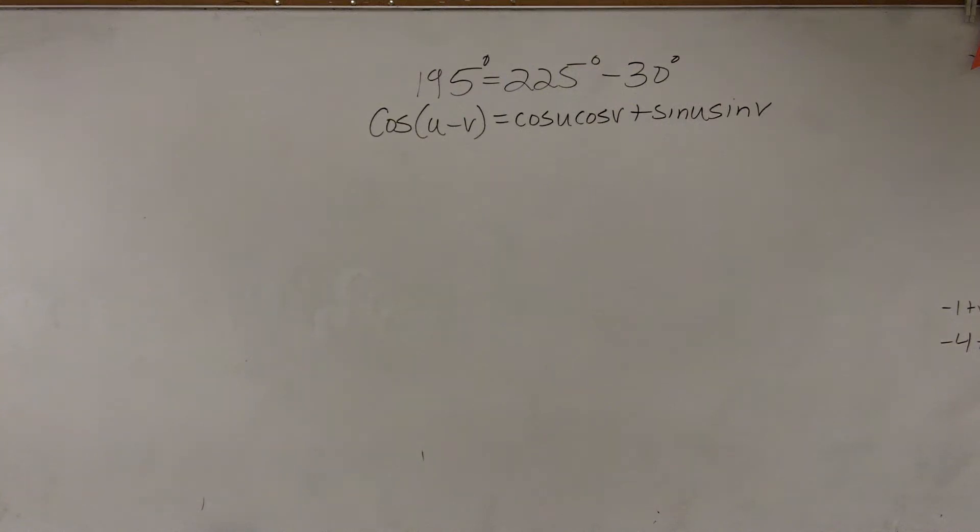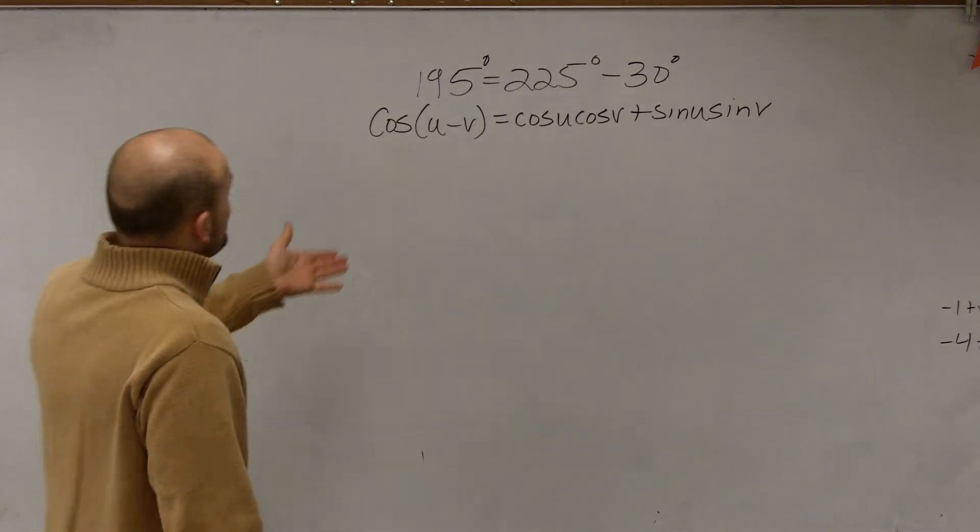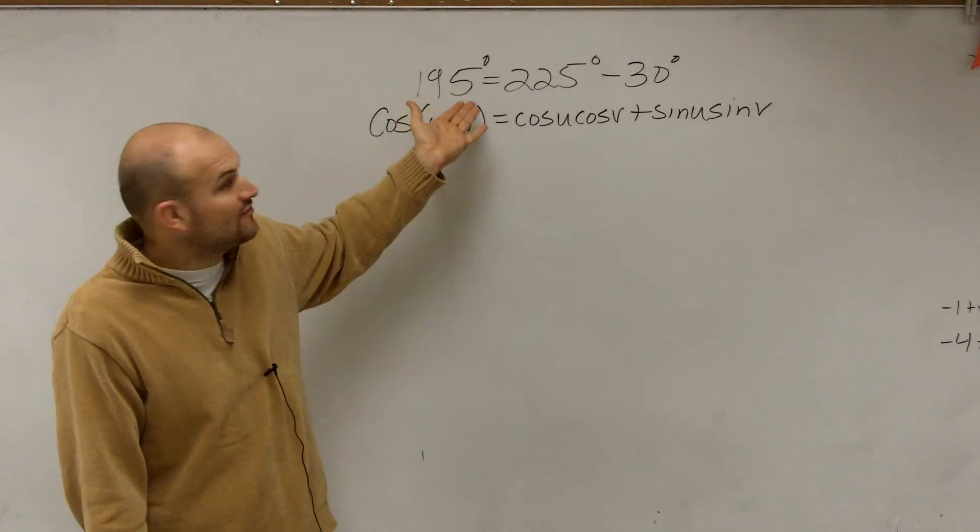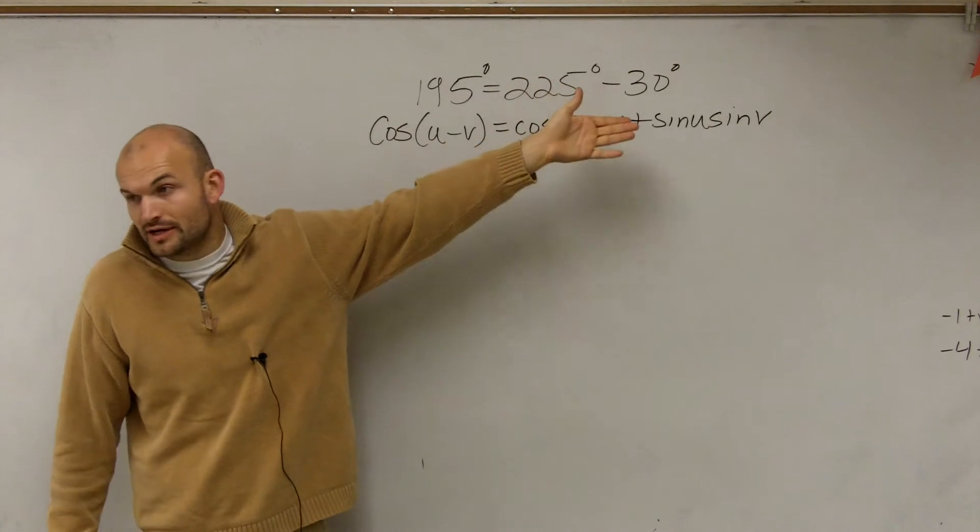All we're going to do is, first of all, we look at this and we say, if I want to find the cosine of one angle minus the other, which in this case we have 195, can be re-represented as 225 minus 30.